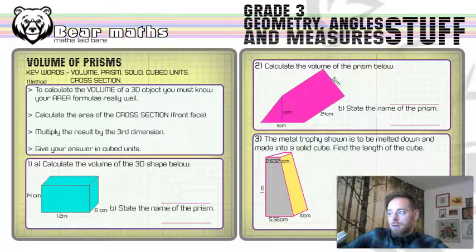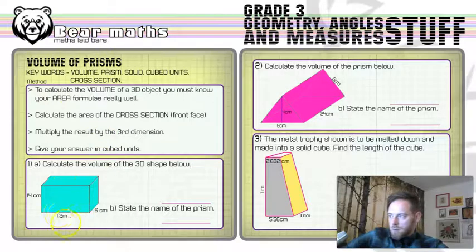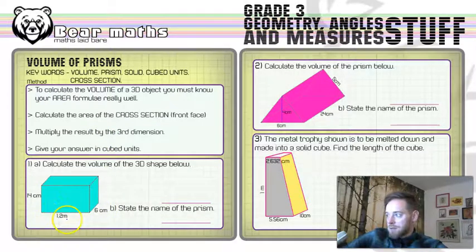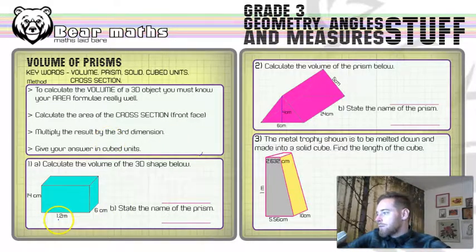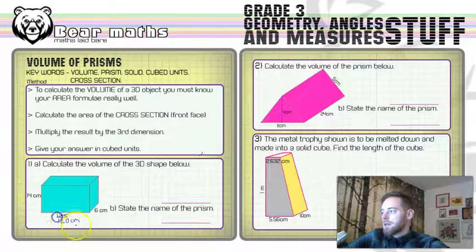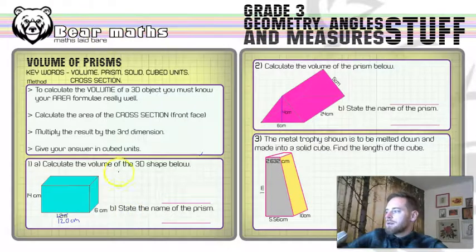So, question number one asks us to calculate the volume of the 3D shape below. This is a slightly trickier version of a question, because we've got some mixed units here. We've got centimetres and metres. First of all, we need to deal with that. We need to get rid of that being 1.2 metres, and turn it into 120 centimetres. You could convert these to metres if you wanted to, but I think it's easier to make them whole numbers rather than decimals. So, we're going 120 centimetres.